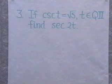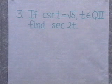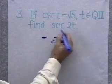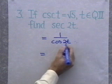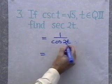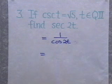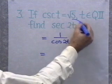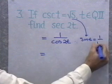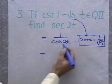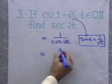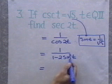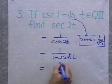Let's look at the next problem. Suppose csc(t) = √5 and t is in quadrant 2. Find sec(2t). Well, I know that secant is 1 over cosine, so I'll write sec(2t) = 1/cos(2t). Now with my cosine formula, I have three different forms I can use. One involves both cos(t) and sin(t), a second involves just cos(t), and a third involves just sin(t). Since csc(t) = √5, that means sin(t) = 1/√5. So I'm given the sine of t — let's use the cosine(2t) formula that involves only sin(t): cos(2t) = 1 - 2sin²t.